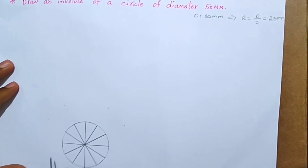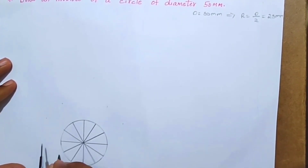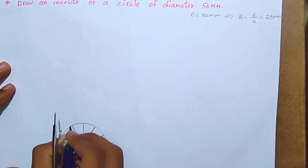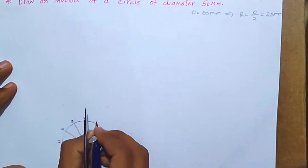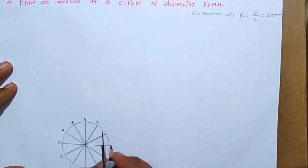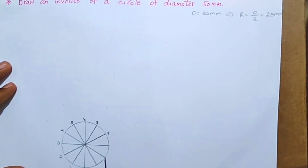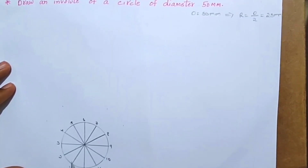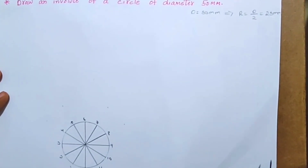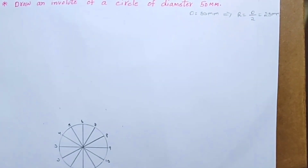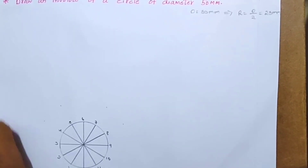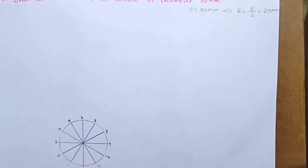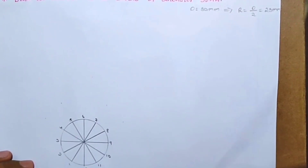Now friends, we take numbering for each point. Numbering: 1, 2, 3, 4, 5, 6, 7, 8, 9, 10, 11, 12. Okay now friends.